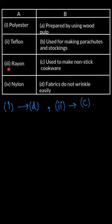Then the third term that we have here is rayon and we know that rayon is prepared by using the wood pulp. So the correct match for 3 is A. So we can write that 3 is the correct match for A.